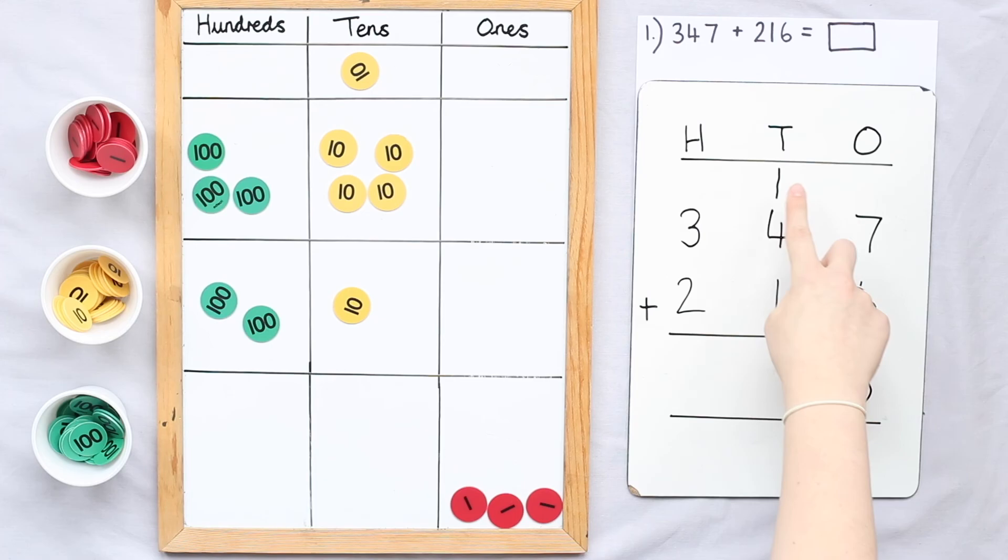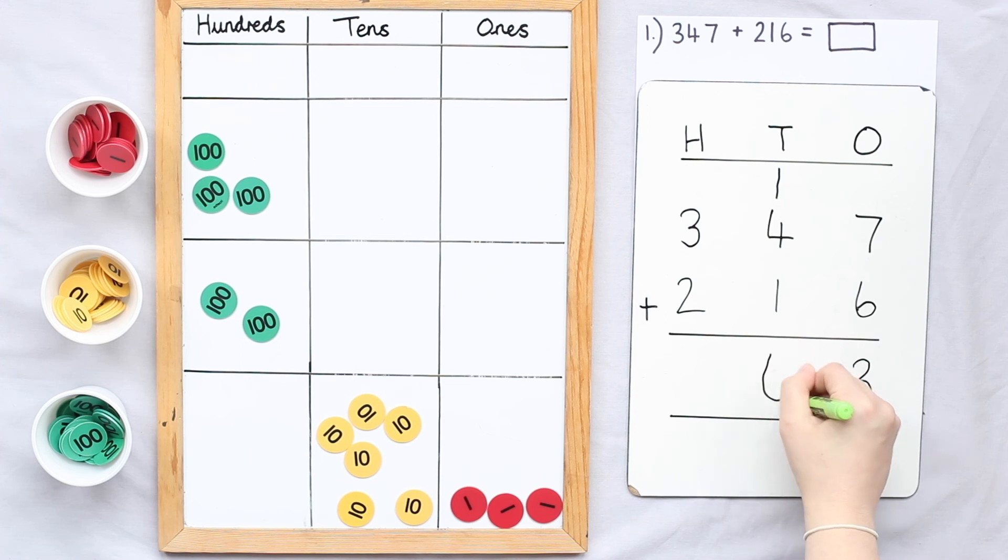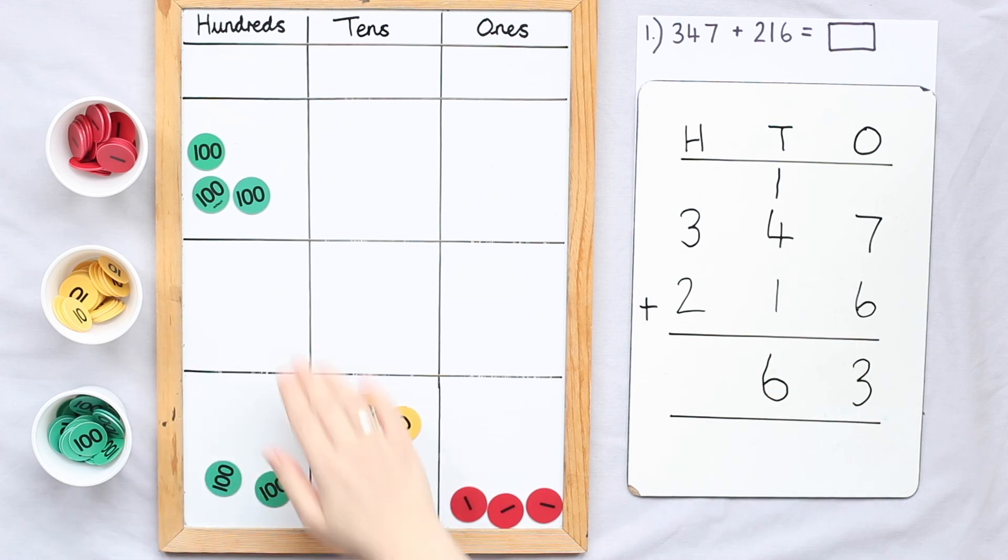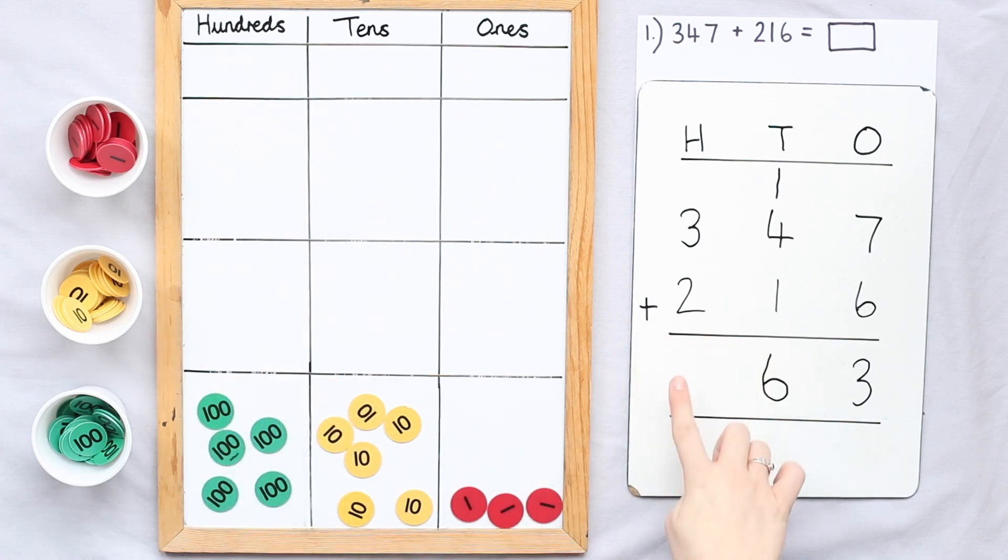Now I can add together all of my tens, remembering the one ten I placed at the top. One ten add four tens, add one ten equals six tens. Now I can add together my hundreds. Three hundreds add two hundreds equals five hundreds. So all together I have five hundred and sixty-three.